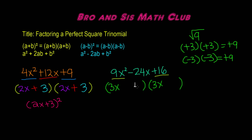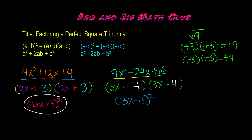The square root of the last term, positive 16, is 4, because 4 times 4 gives you 16. To determine the sign, we look at the sign of the middle term, which is negative 24x. So the 4 is going to be negative. We have (3x − 4)(3x − 4), or simply (3x − 4)². These are our two solutions: (2x + 3)² for the first trinomial, and (3x − 4)² for the second perfect square trinomial.